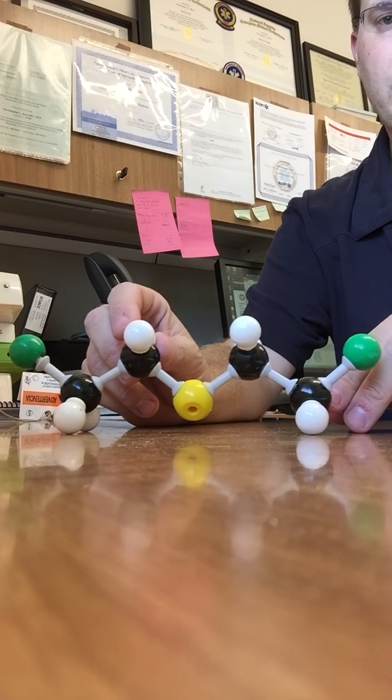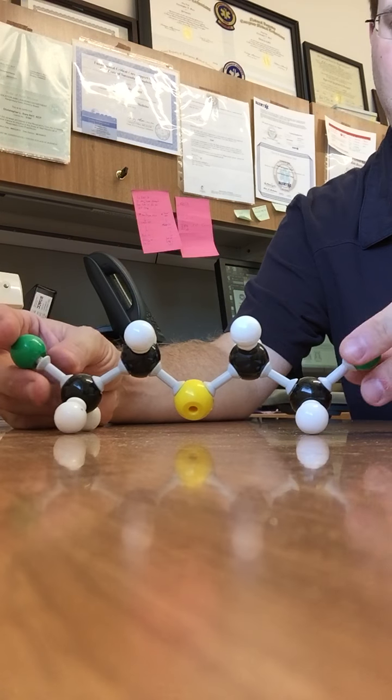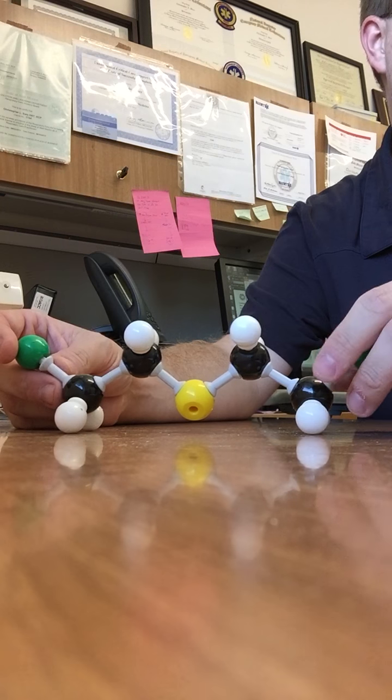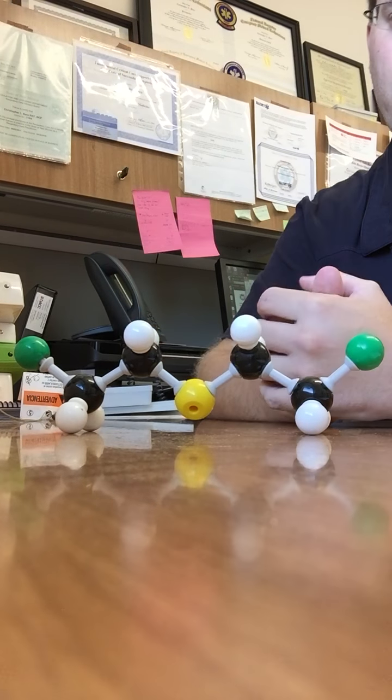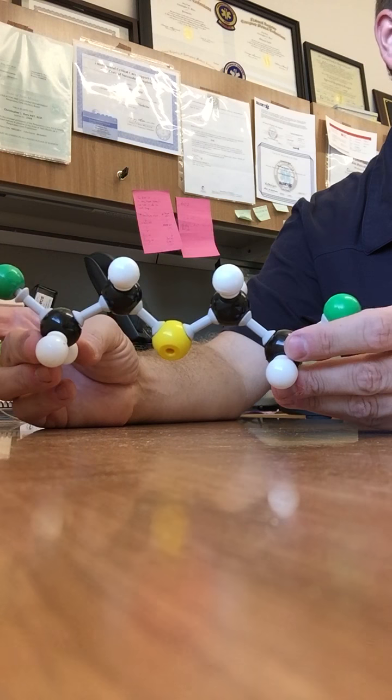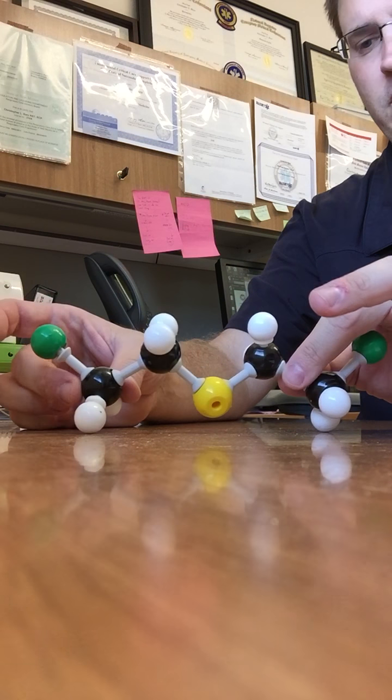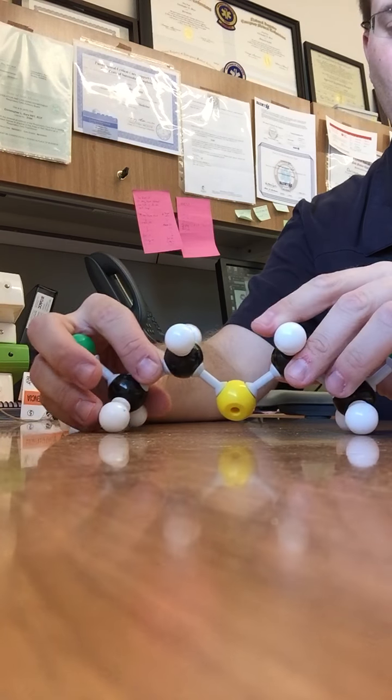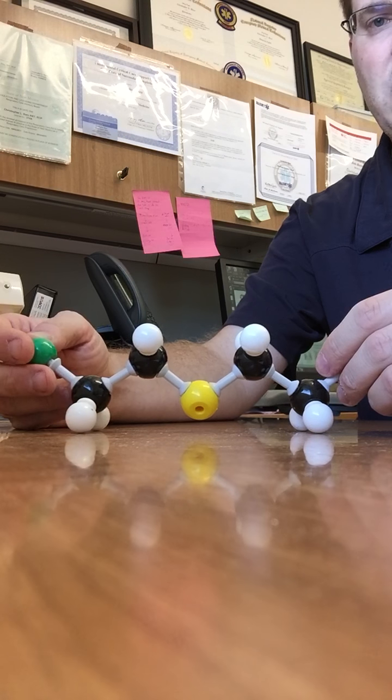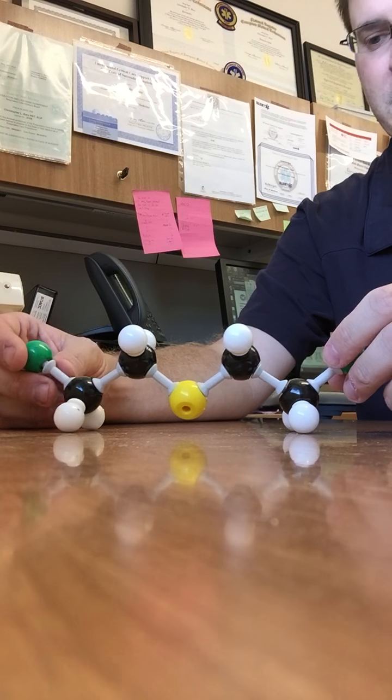This just happens to be a sulfur mustard. So we'll stick with this. So this sulfur mustard is the active ingredient in something known as mustard gas. It has the military designation of H and HD. I believe that H is kind of an impure form which is weaponized and HD is more purified. In its pure form, a sulfur mustard like this is pretty much a clear, colorless, odorless, viscous liquid at room temperature.